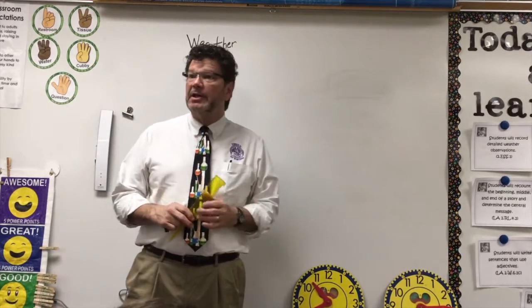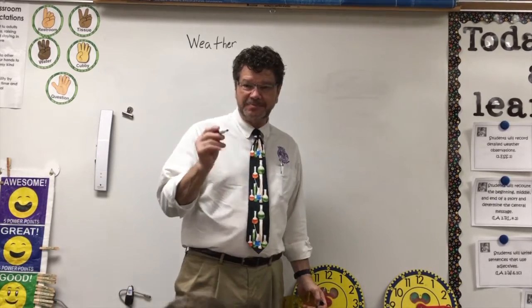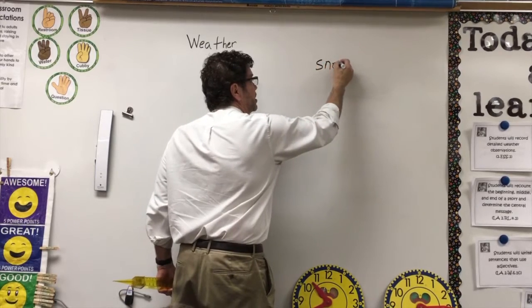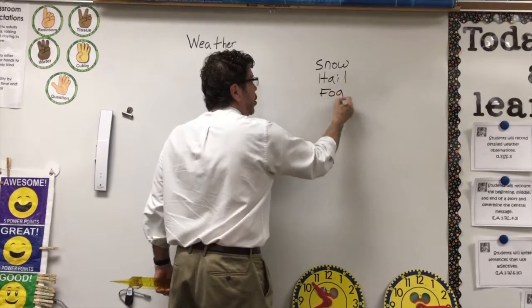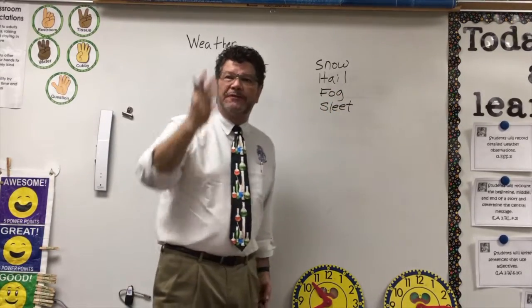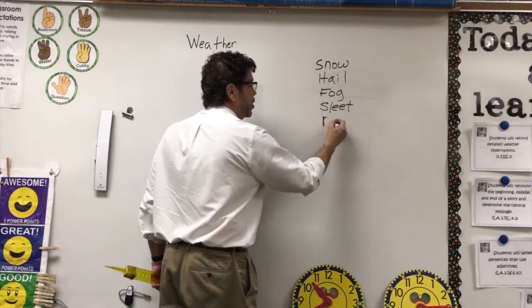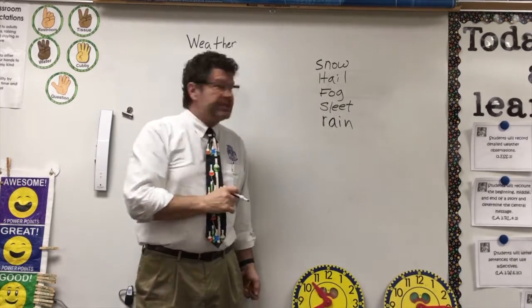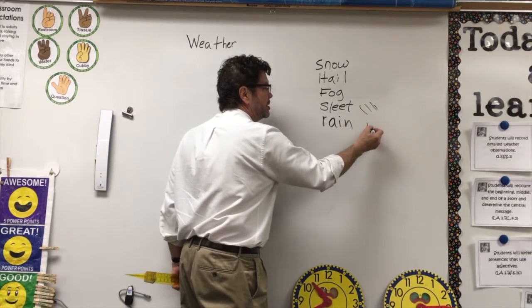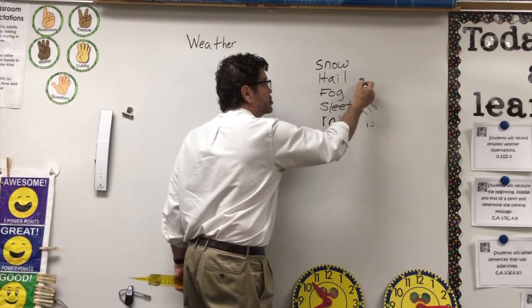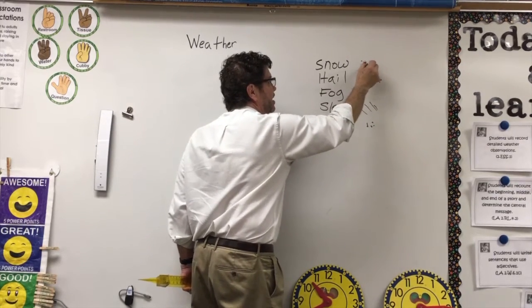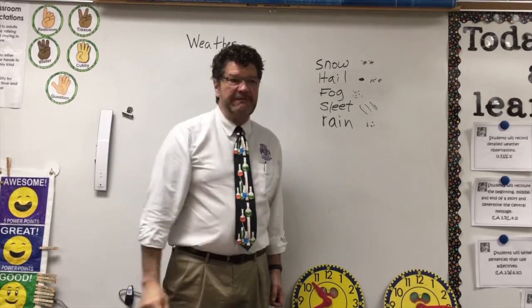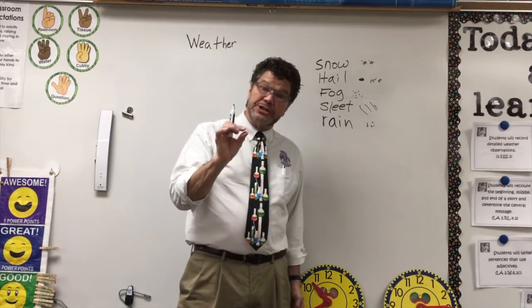You guys did a really good job identifying nice weather and severe weather. Now we're going to talk about the tools that we use to make observations and measurements for weather. Let's talk about something called precipitation — say it. That means when it snows, or if there's hail, or if there is fog or sleet. Sleet is when rain turns to ice, rain is drops, fog is like it was this morning, and hail is chunks of ice.